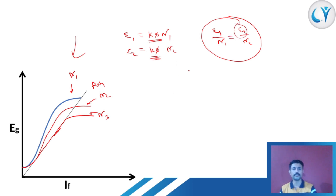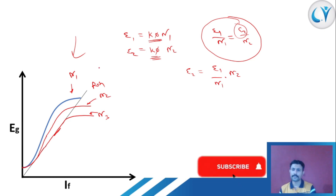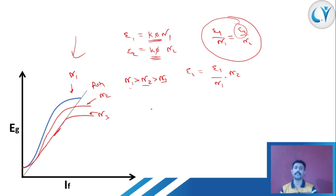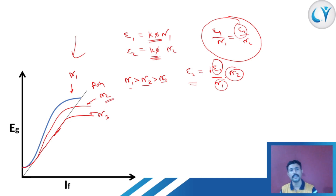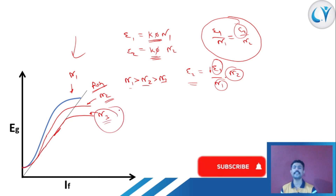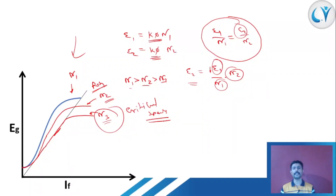E2 = (E1 / n1) × n2. From the graph, n1 > n2 > n3. Since n2 < n1, the ratio n2/n1 is less than 1, and therefore E2 is definitely going to be less than E1. Now if we reduce the speed such that RSH becomes tangent to the OCC at speed n3, then n3 becomes the critical speed. That means you cannot further reduce the speed of that generator and still get a proper amount of induced EMF. If you reduce speed below the critical speed, you will not get the full induced EMF.